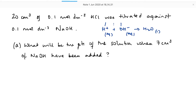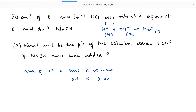What will the pH of the solution be when seven centimetres cubed of sodium hydroxide have been added? The first thing I need to do is figure out how many moles of hydrogen ions I had in my original solution. It was 20 centimetres cubed, 0.1 mole per decimetre cubed. So moles of hydrogen ions equals concentration times volume: 0.1 times 0.02 decimetres cubed, which comes out at 0.002 moles.